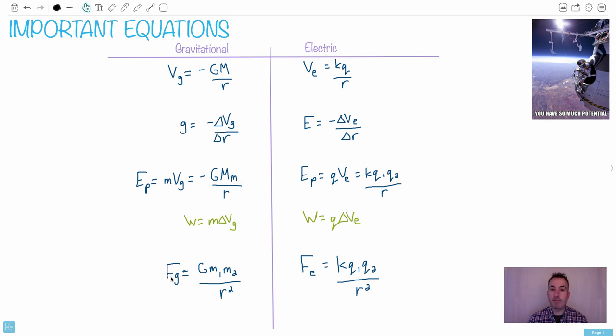For example, the gravitational force, it's a constant times a mass times another mass divided by the distance between them squared. Whereas the electric, it's a constant times, instead of a mass, it's a charge. So there's two charges times the distance divided by, sorry, the distance between them squared. Do you notice they look really similar, don't they?